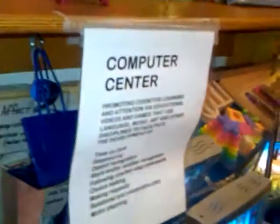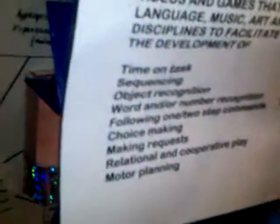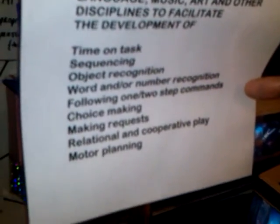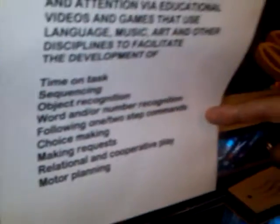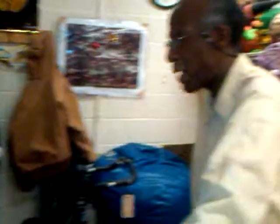The kinds of things we do here in the computer center include time on task, sequencing, object recognition, word and/or number recognition, following one-step or two-step commands, choice making, making requests, relational and cooperative play, and motor planning.